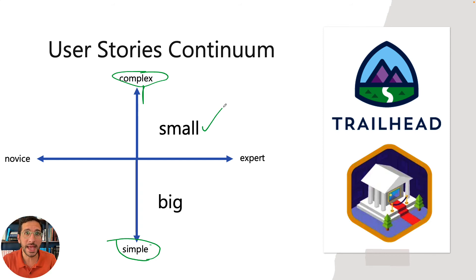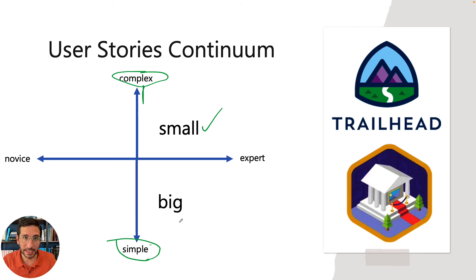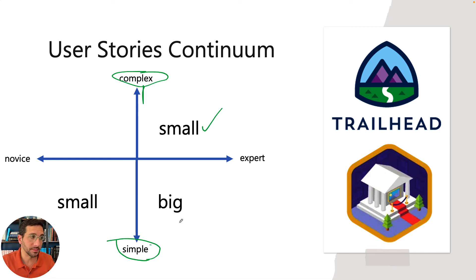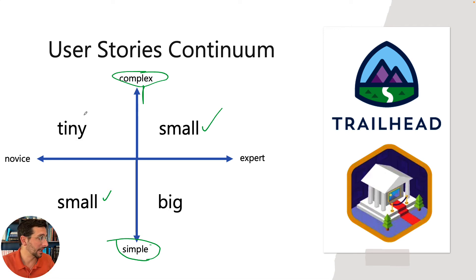If you're an expert and the task is simple — like making a chicken dinner for your family — you might just say 'I'm making dinner' and not need to break it down into washing the broccoli, cleaning the chicken, and so on. Similarly, if you're doing something simple and you're a novice, you still want a small user story. And if something's complicated and you're a novice, you want to make it as tiny as possible, so each thing has just a few items to do, and you'll be able to knock them out of the park.